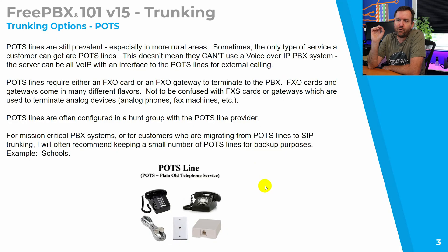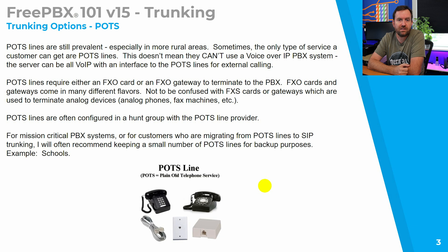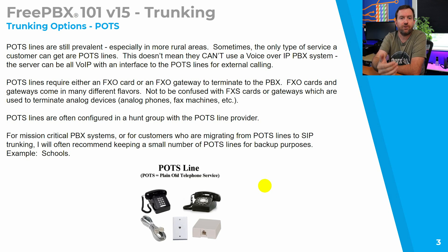With voice over IP, inbound and outbound can use the same caller ID regardless of how many concurrent calls you have. For mission-critical PBX systems, or customers migrating from POTS to SIP trunking, we often recommend keeping a couple of POTS lines as backup. For example, a school switching to all-SIP for cost savings is internet-dependent, so for a mission-critical location like a school or hospital we recommend keeping one or two POTS lines just in case — if anything happens to your internet, you can still make emergency calls out on those POTS lines.